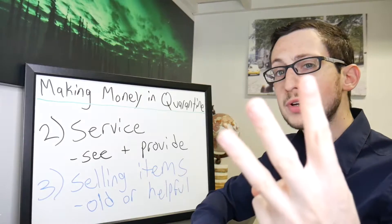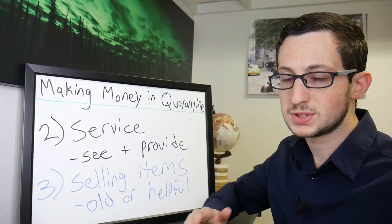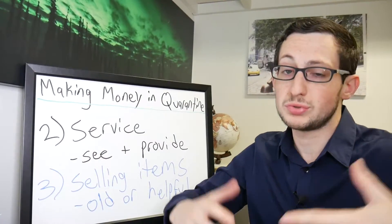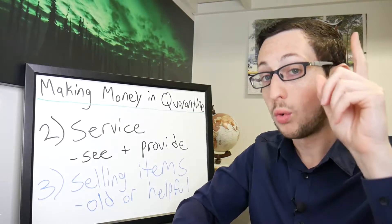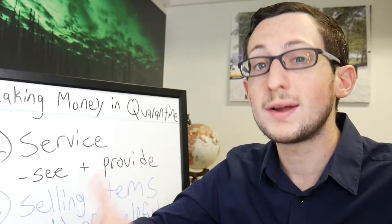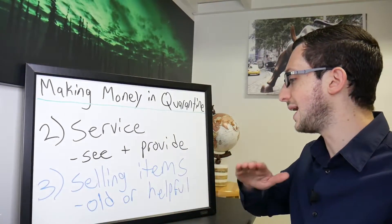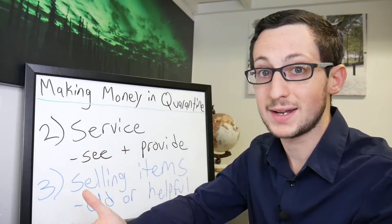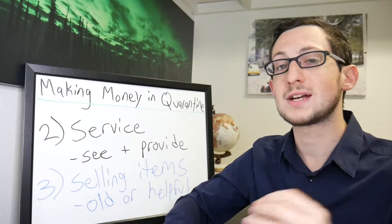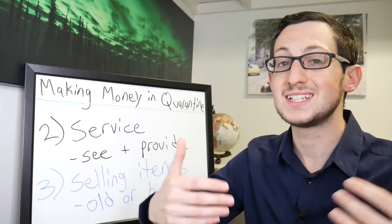Moving on to number three, we talked about services but now what about products. You could actually sell items. Now one, you could obviously sell your old stuff that you don't need anymore so you can make a few extra bucks. Or similar to number two, a lot of people are requiring something right now. We're in a crisis, so if you're able to actually help them by selling an item that could help them as well. And they would be more than willing to actually buy that item again because we're in a crisis and they need assistance.